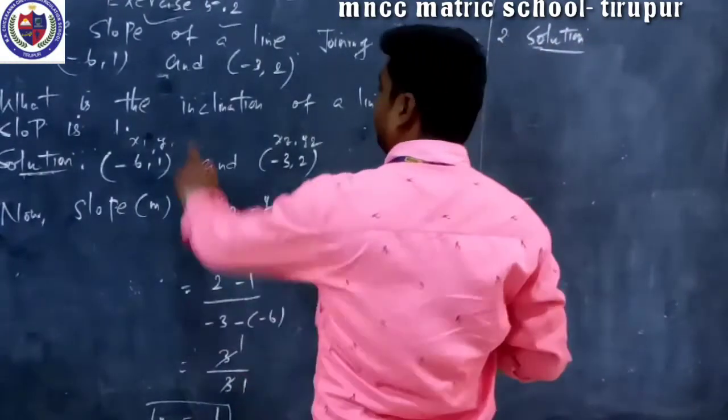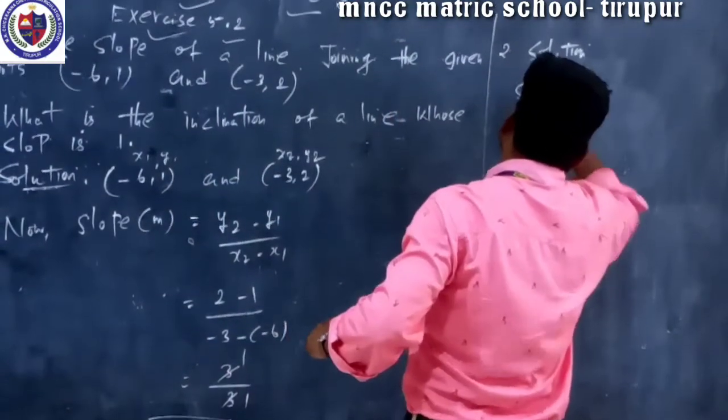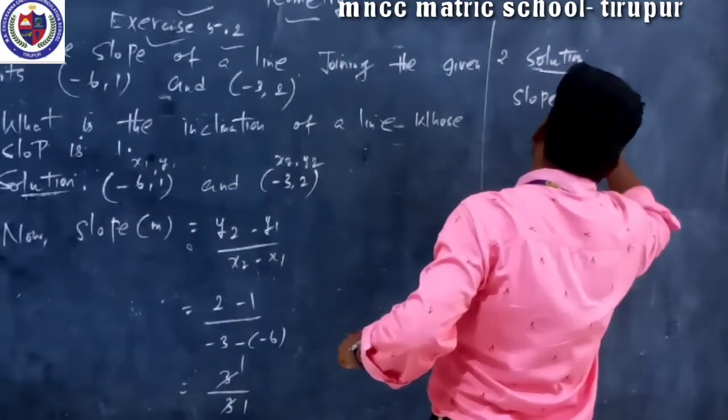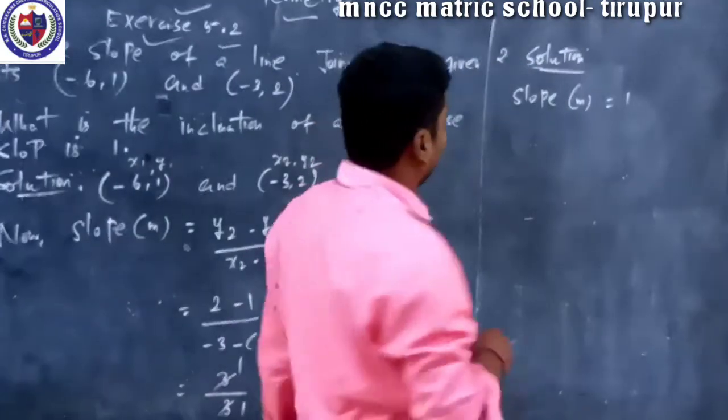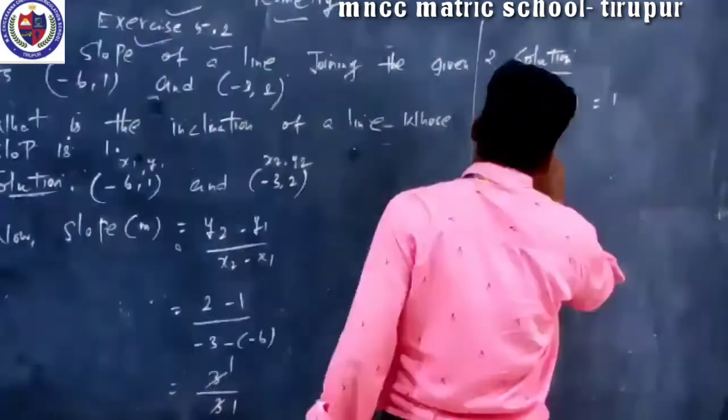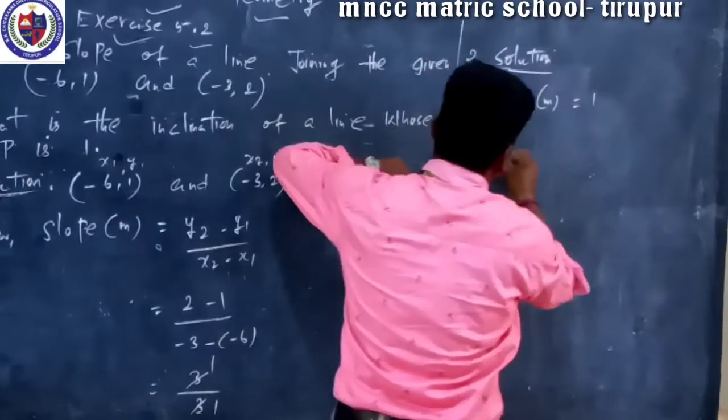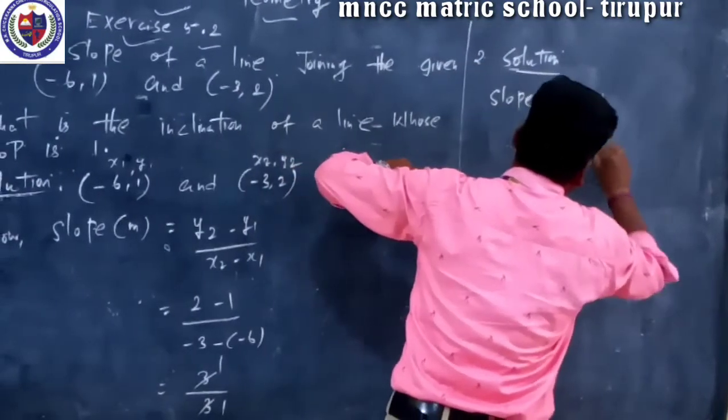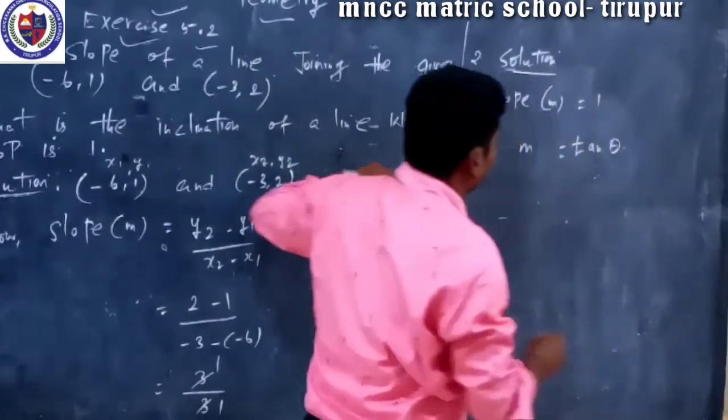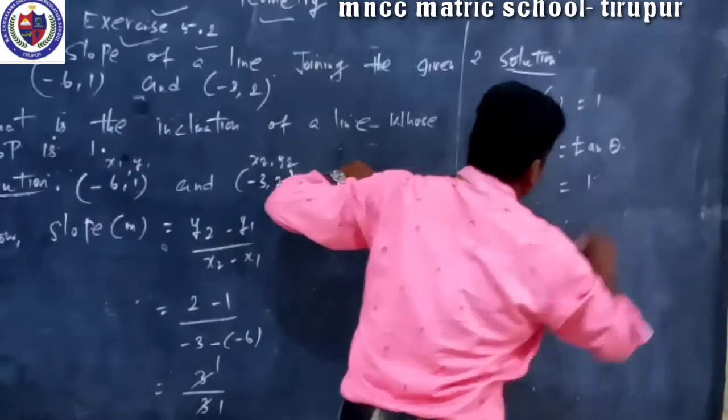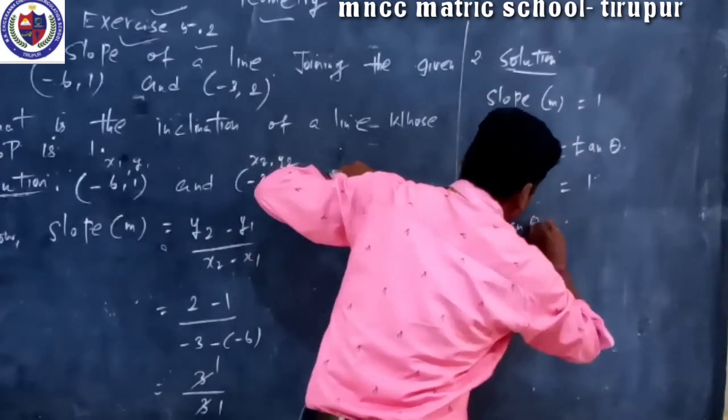Given value is M equal to 1, so M equal to tan theta. M equal to 1, so tan theta is equal to 1.